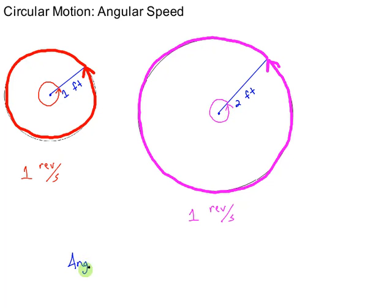Angular speed equals angle, rotated through, per unit of time. So divided by time.